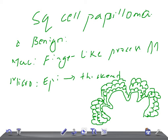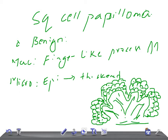All the cells look like finger-like projections, right. So this is known as finger-like projections from this tissue. The central core of the papilla is composed of loose fibrovascular tissue.